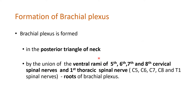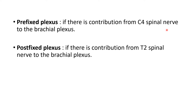The brachial plexus is formed by the union of ventral rami of the 5th, 6th, 7th, and 8th cervical spinal nerves and the 1st thoracic nerve — that is from C5 to C8 and T1. We call these ventral rami the roots of the brachial plexus. Sometimes C4 can contribute, giving a prefixed plexus; if T2 contributes, it is called a post-fixed plexus.